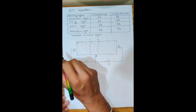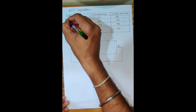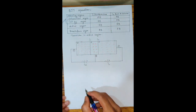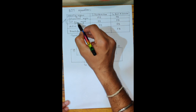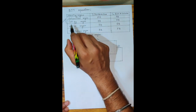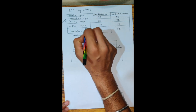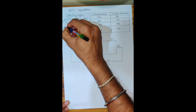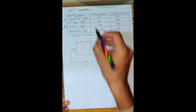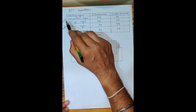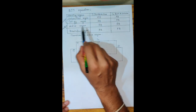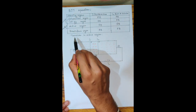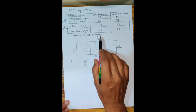When the BJT is operated in the saturation region and cutoff region, it can be used as a switch — this is one of the key applications of the BJT. When the BJT is operated in the active region, it can be used as an amplifier. So in saturation and cutoff it acts as a switch, and in the active region it acts as an amplifier.